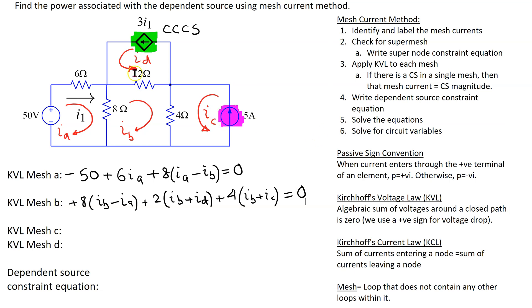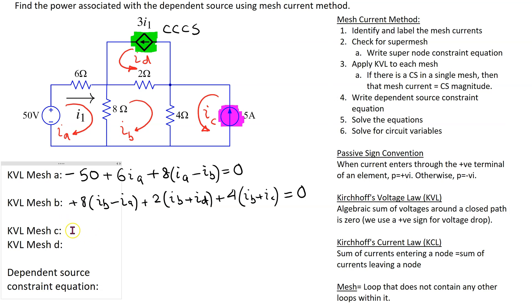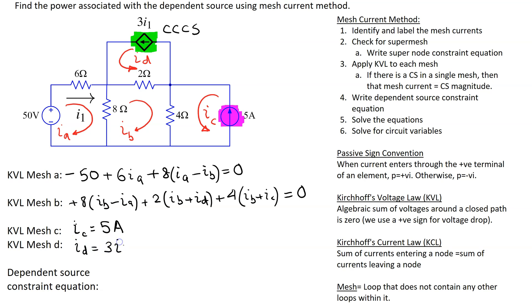Now we deal with meshes C and D. If a current source is present in a single mesh, the mesh current equals the current source magnitude directly, so we do not need to apply KVL. Current IC is in the same direction as its current source, so we write IC = 5 amps. Similarly, current ID flows in the same direction as the dependent current source, so we write ID = 3·I1.